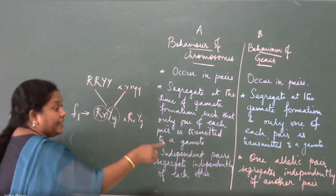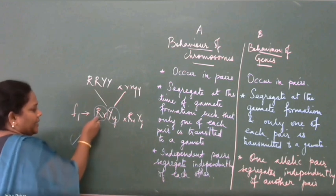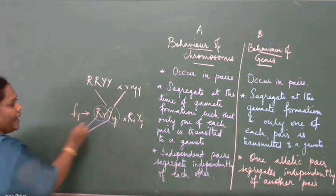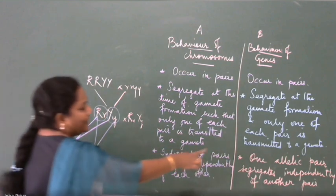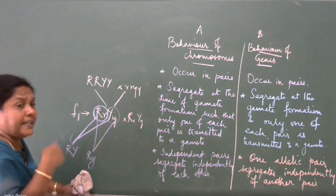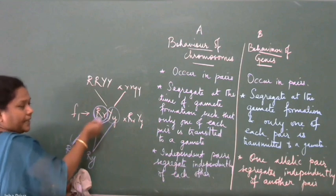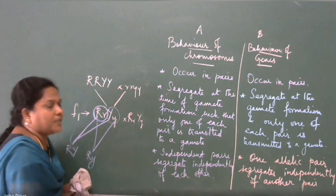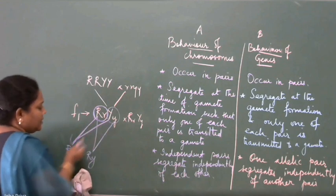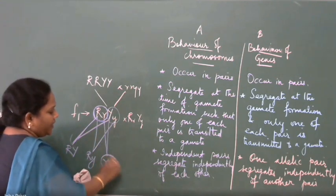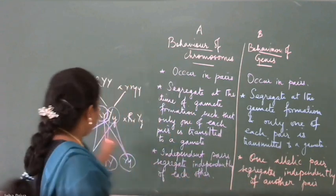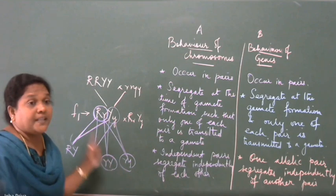One allelic pair segregates independently of another pair. How do we form the gamete? Capital R is joining with capital Y; capital R is not joining with small R. So this is one gamete and this is another gamete — this is one allelic pair. They segregate independently; capital R and small R separate during gamete formation. That is what we have learnt in the law of segregation or independent assortment. So this can join with this — small R capital Y and small R small Y. One allelic pair segregates independently of another pair; they are independently assorted.